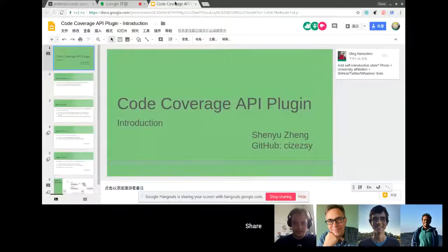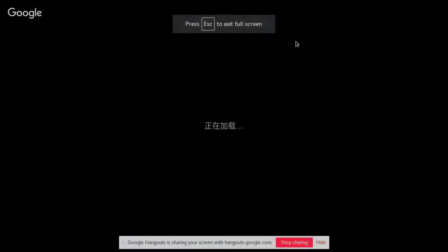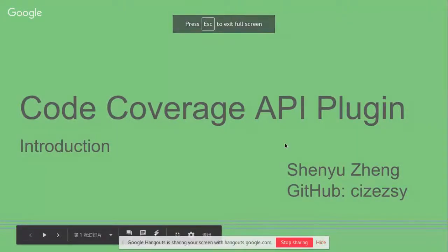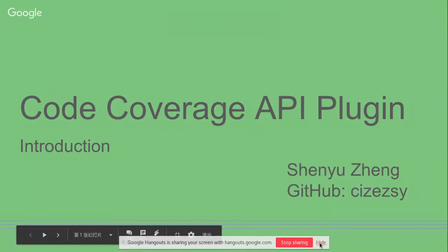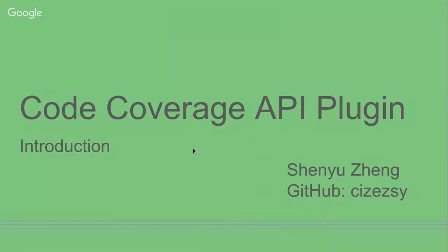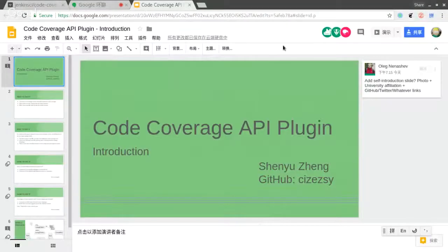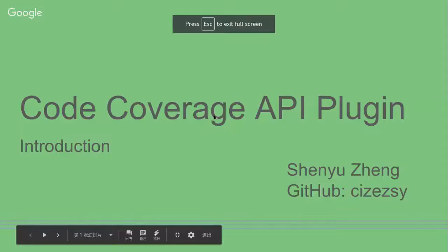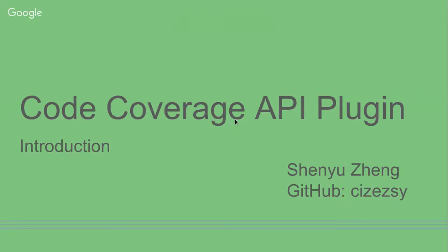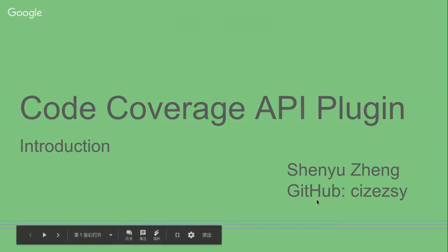I'm sharing my screen now. So you can see my screen clearly? Yes. I will show the presentation now. This project is for GSoC 2018 Jenkins' code coverage API plugin. My name is Sun Yu Zheng, you can call my English name Shia Chen. I am a third-year student at Henan University. This is my GitHub ID.